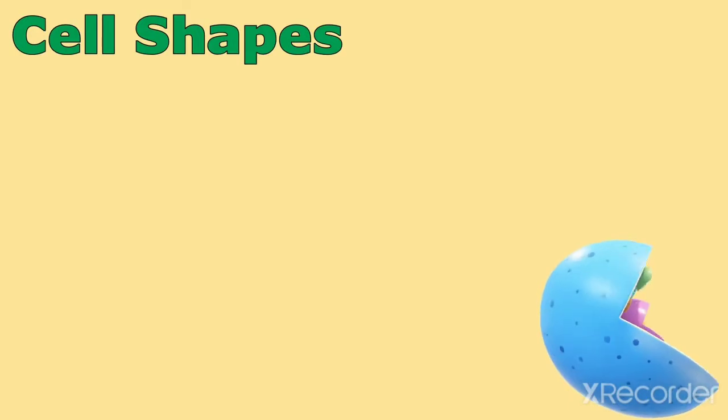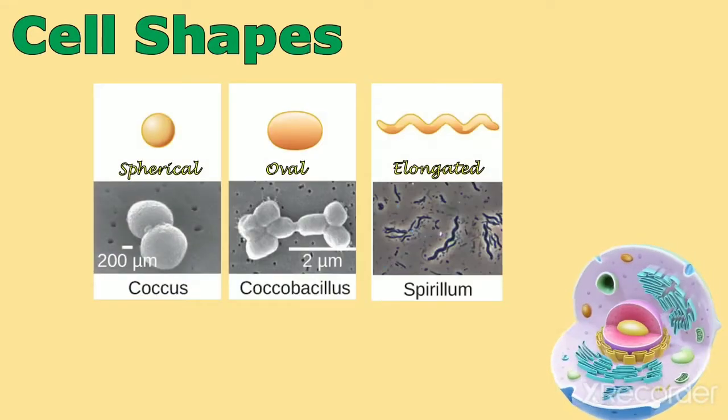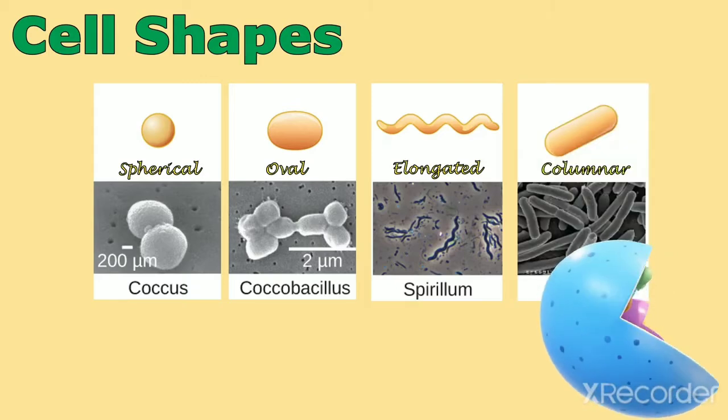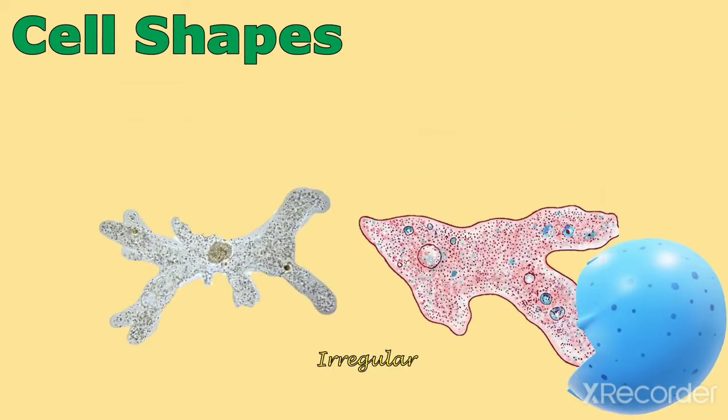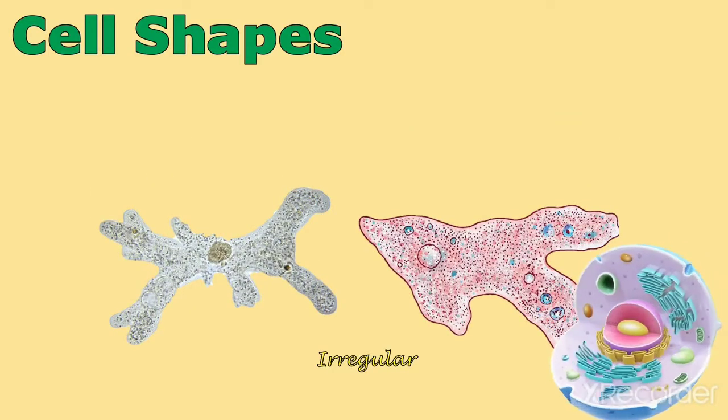Cell shapes. Cells are of various shapes which may be spherical, oval, elongated, or columnar. Amoeba is irregular in shape and it keeps on changing its shape.